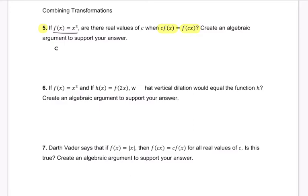So when does this happen? Well, c times f of x equals f of cx. Well, in this case, f of x is x cubed, so it's c times x cubed, and that equals cx. We're inputting the c and the x.